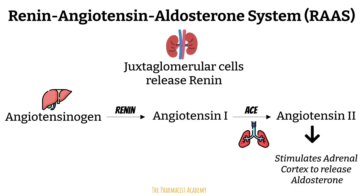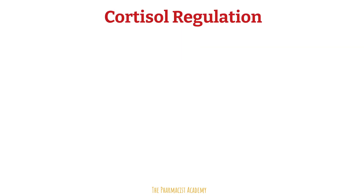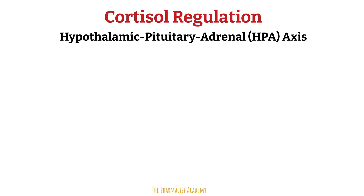An example of a glucocorticoid is cortisol. In order for it to exert its effects, it needs to be released into the blood. The regulation of cortisol is primarily controlled by the hypothalamic-pituitary-adrenal axis, or HPA axis, which is a classic negative feedback system.